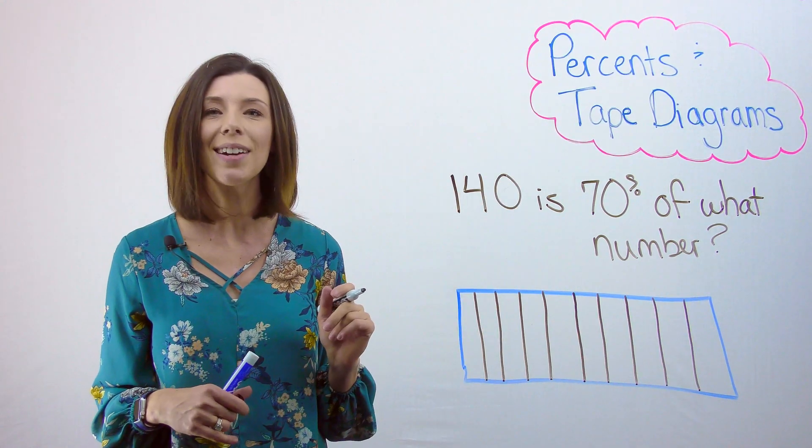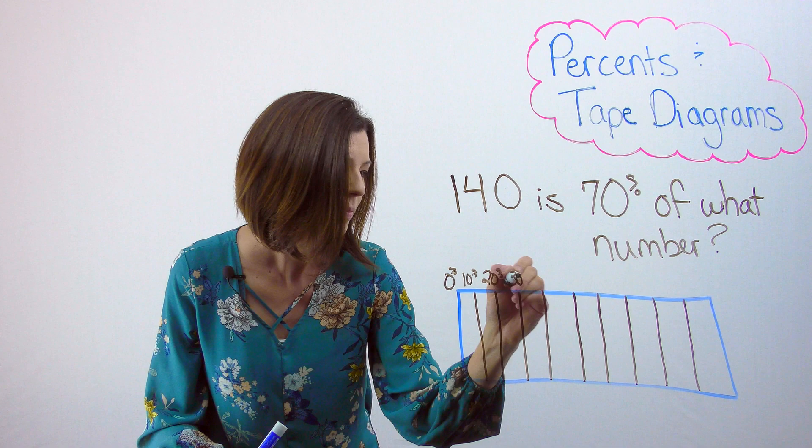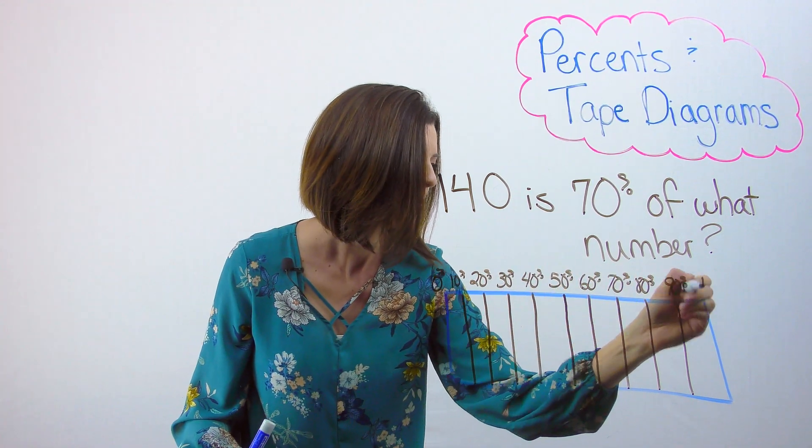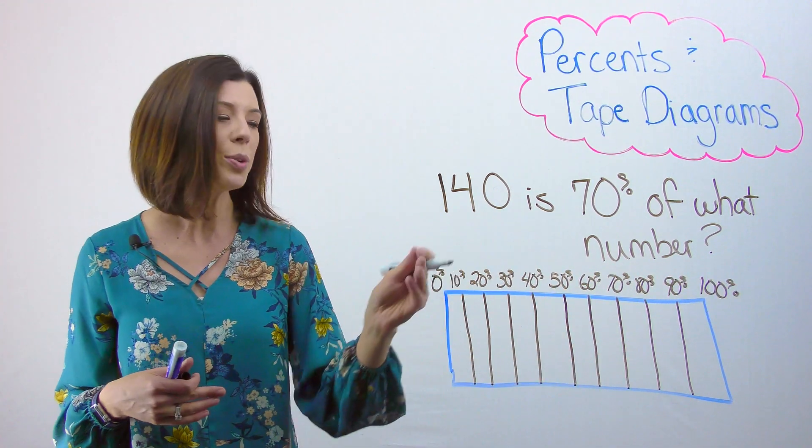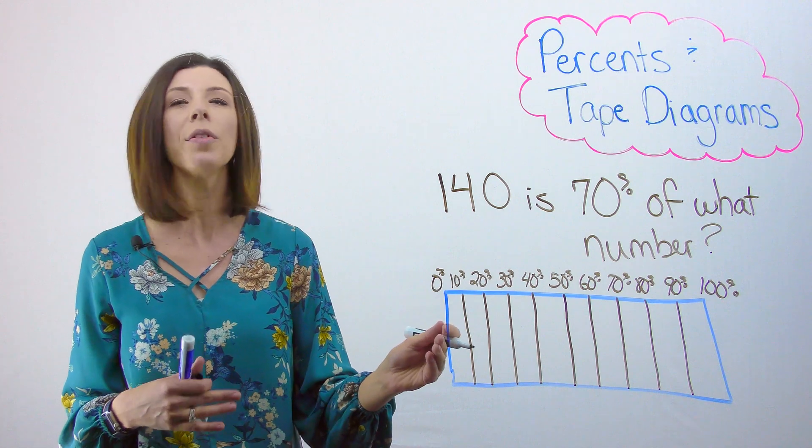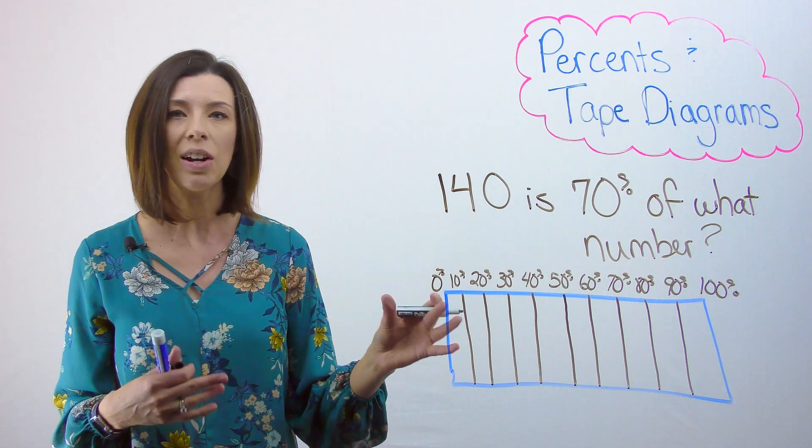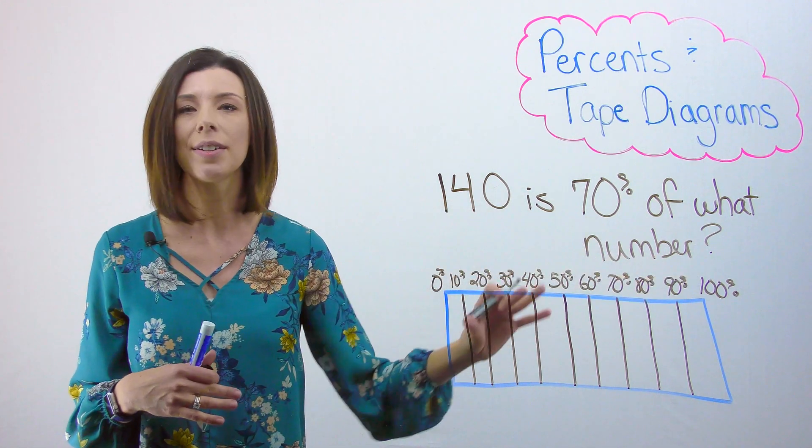Next, I want to label my percents on top. Remember, we always need to include 0% because we know that that is nothing in our whole and 100% because that's our entire whole.